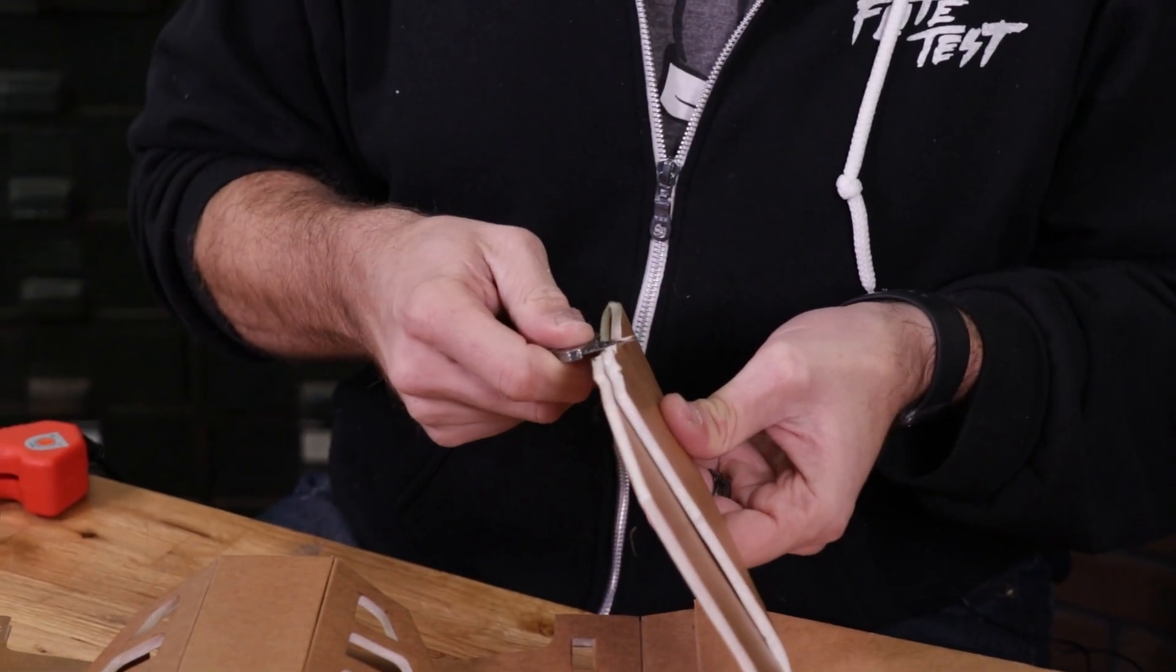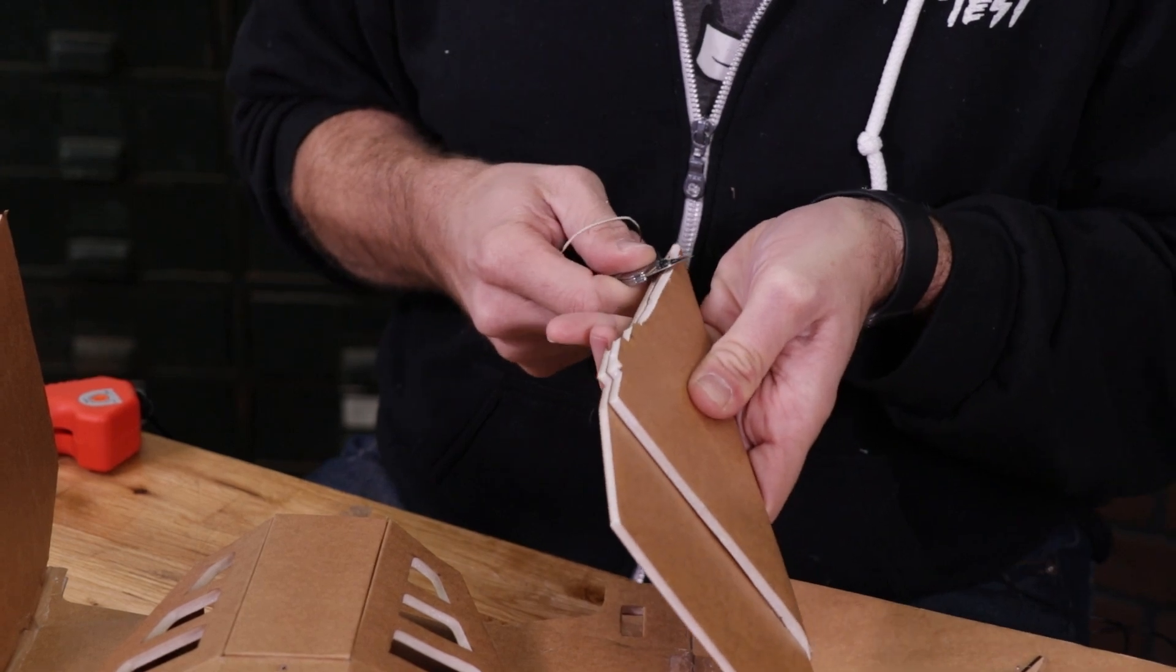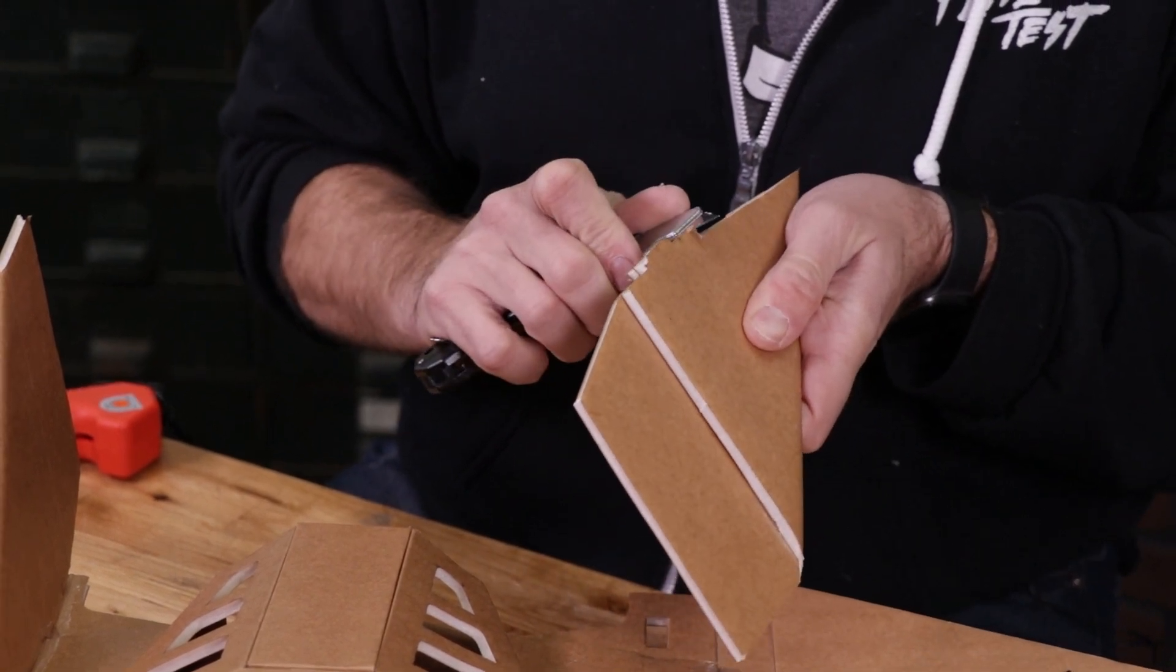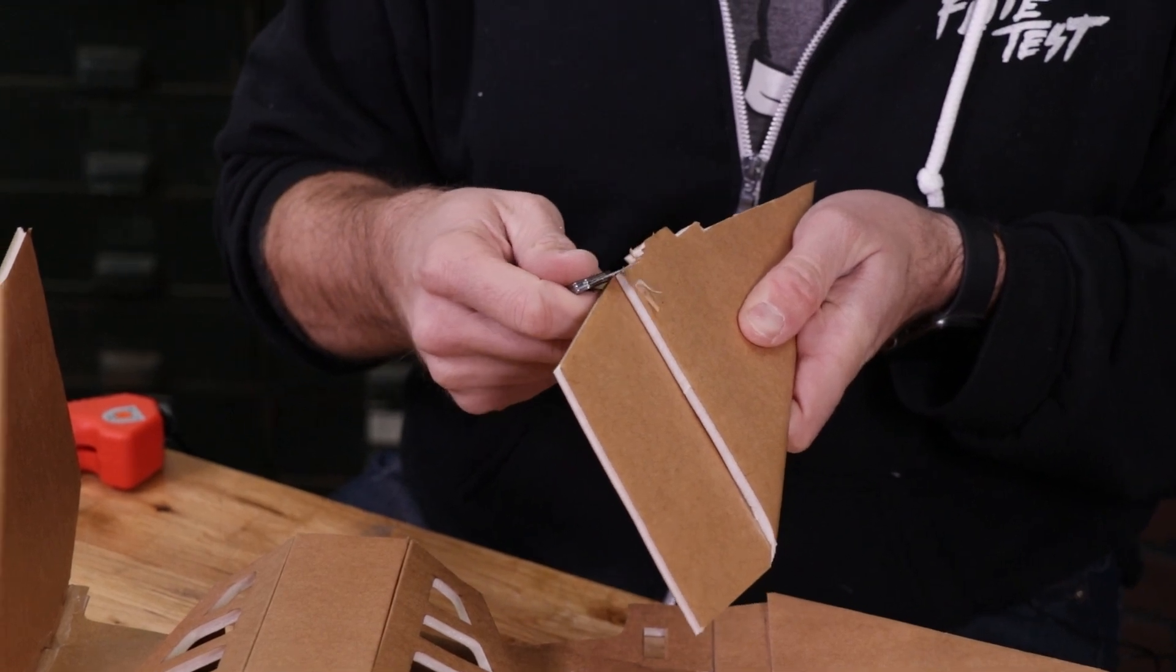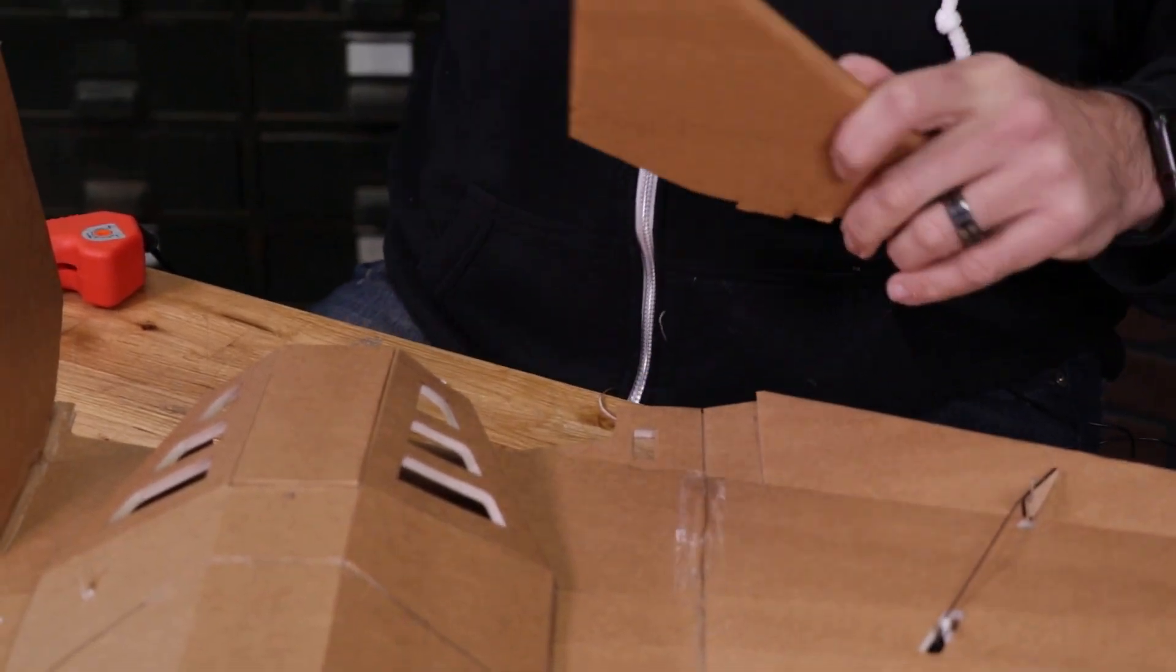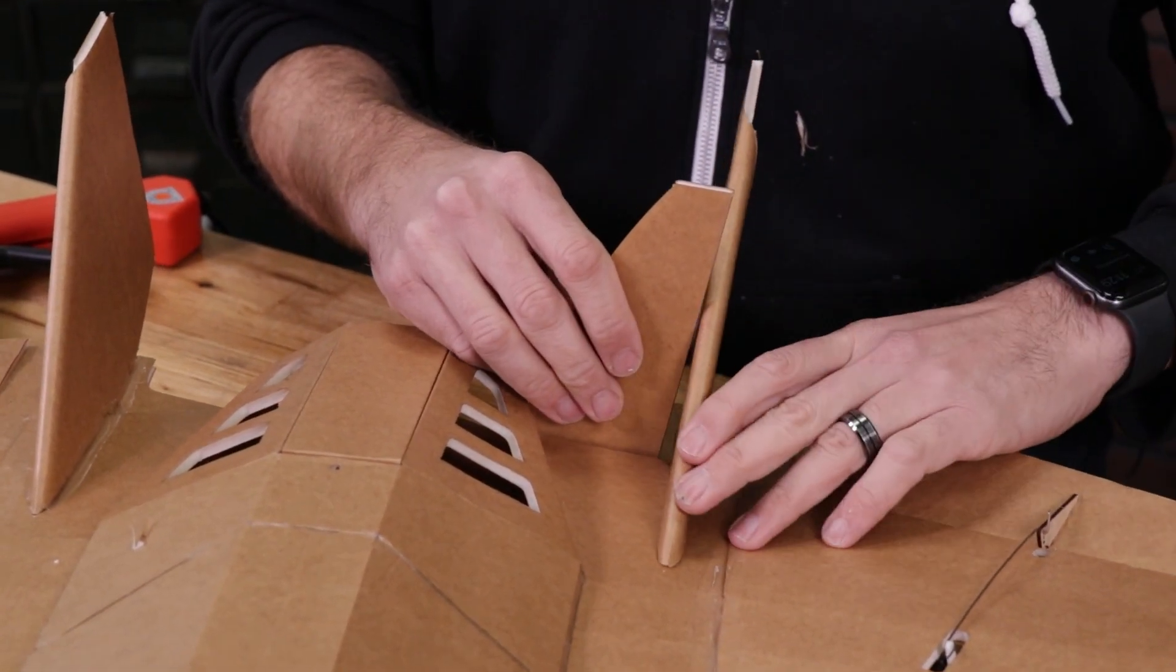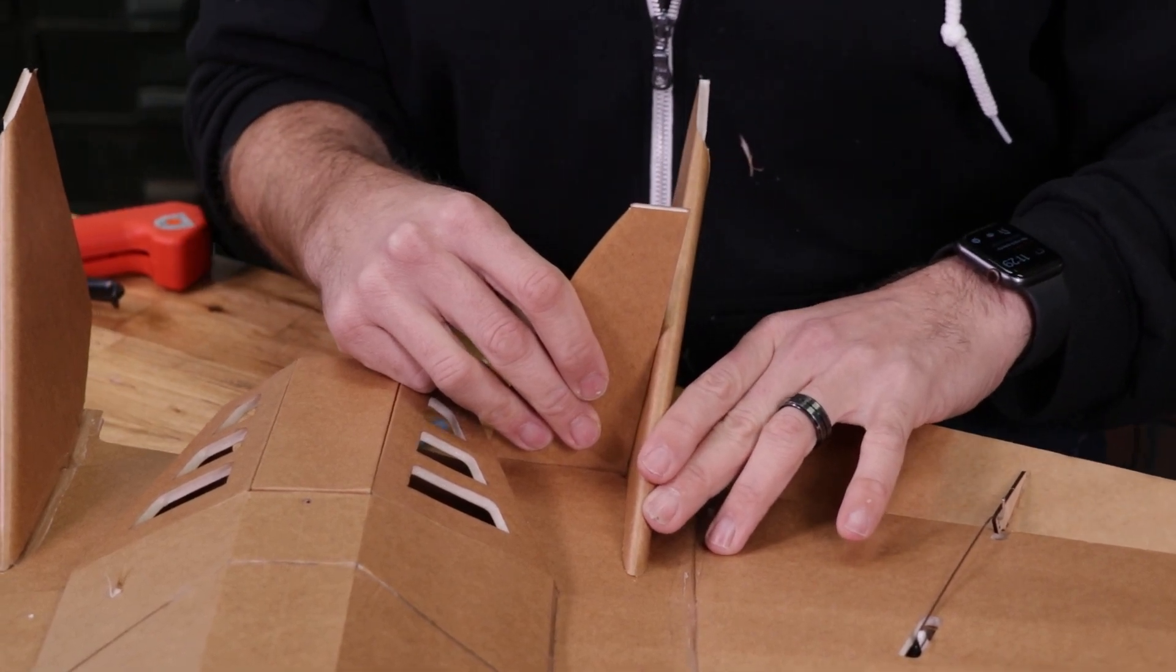Next, we'll cut a very delicate bevel. Quick test with our little gauge here. That looks good.